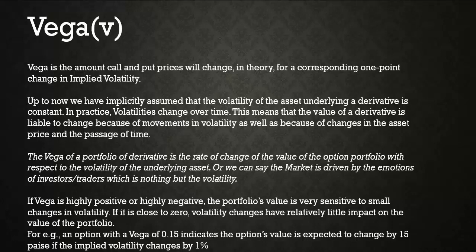Up to now, we have implicitly assumed that the volatility of the underlying asset derivative is constant. In practice, volatility changes over time. This means that the value of the derivative is liable to change because of movement in volatility, as well as because of changes in the asset's price and the passage of time.